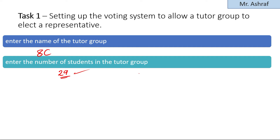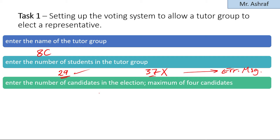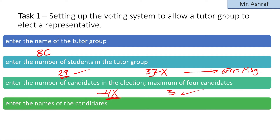The next question asks the user to enter the number of students in the tutor group. You should input a value between 28 and 35 — for example, 29 students. This value would be accepted. However, if you input a value like 37, it should be invalid and an error message should appear indicating the value is not accepted.